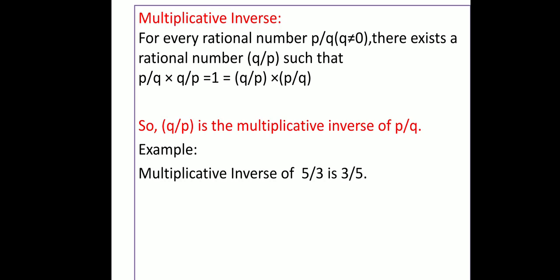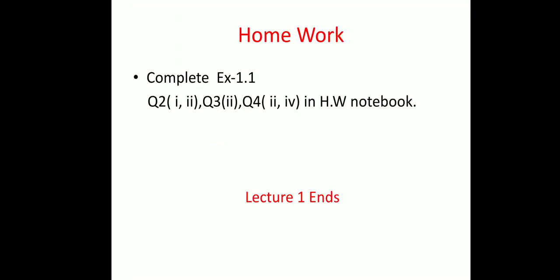Coming to multiplicative inverse: for every rational number P/Q (Q ≠ 0), there exists a rational number Q/P such that multiplying those two rational numbers gives 1. To get the answer 1, we take the reciprocal of the given rational number. So Q/P is the multiplicative inverse of P/Q. For example, the multiplicative inverse of 5/3 is 3/5. I hope you have understood rational numbers, the operations performed on them, additive identity, additive inverse, multiplicative identity, and multiplicative inverse.